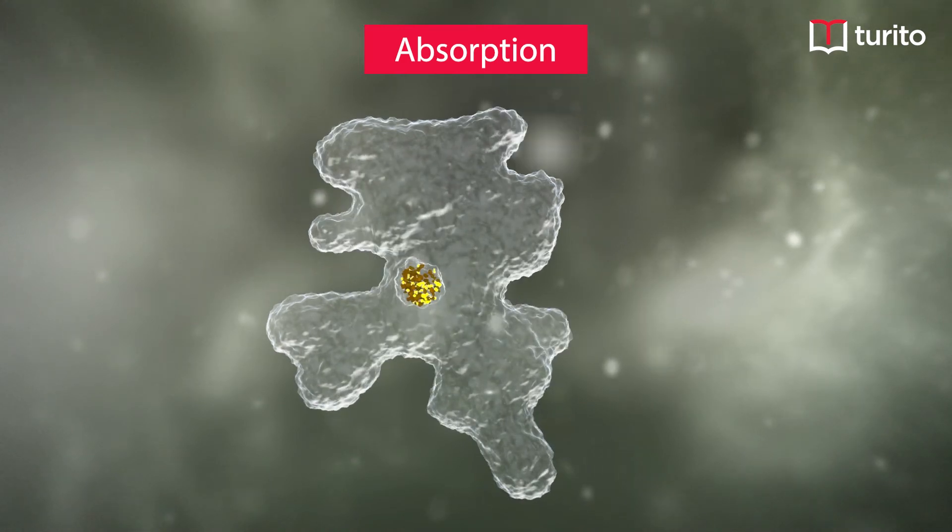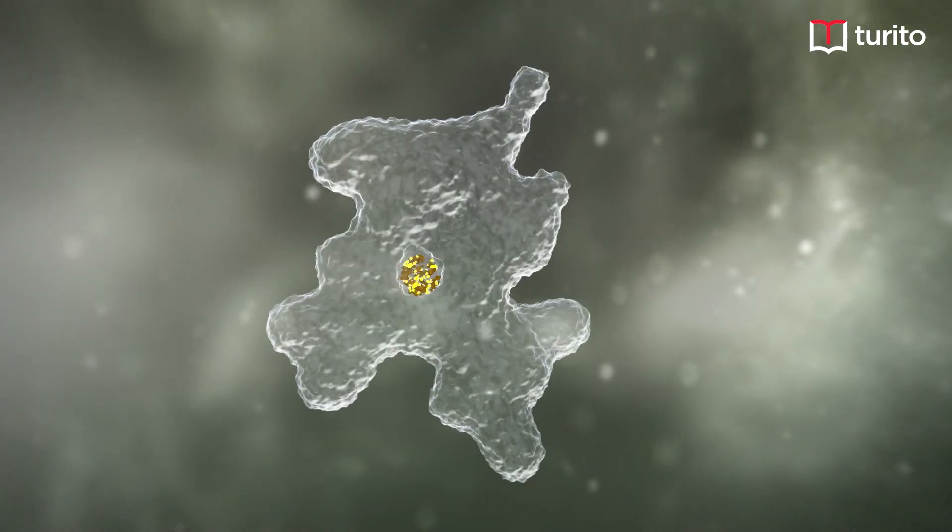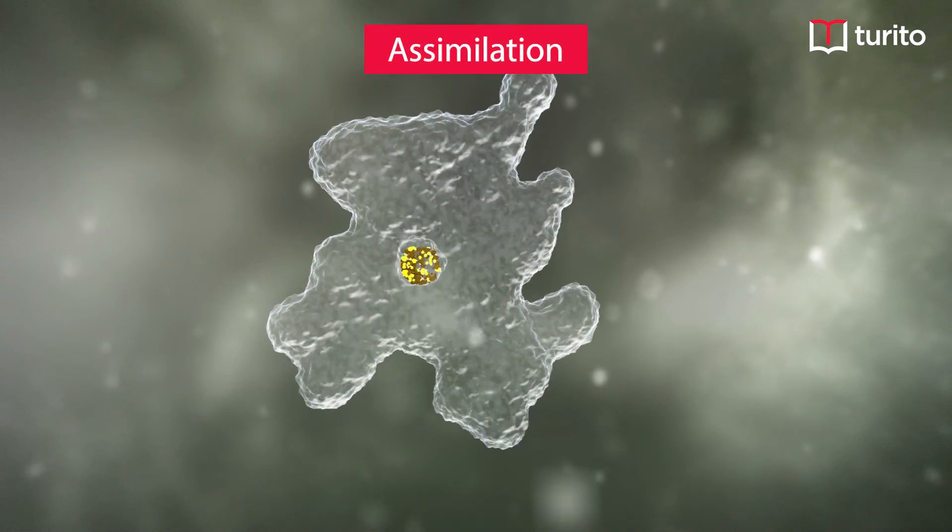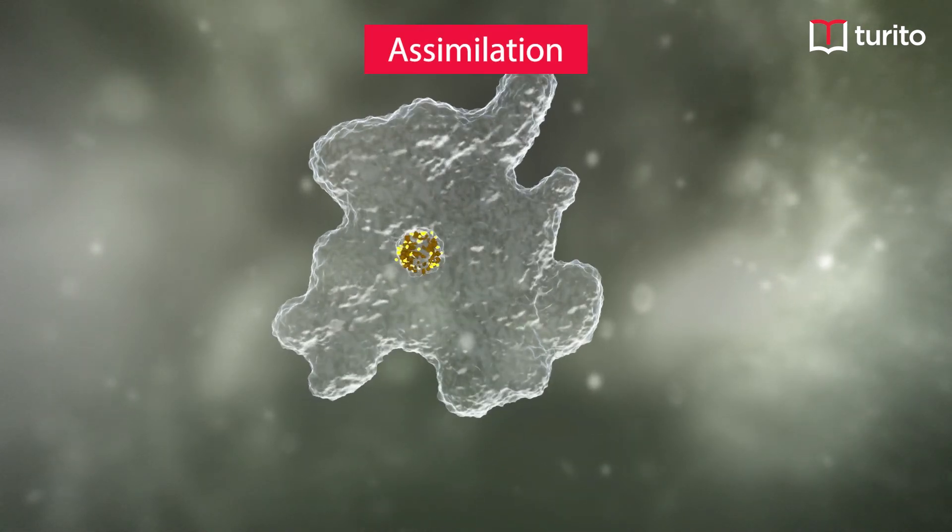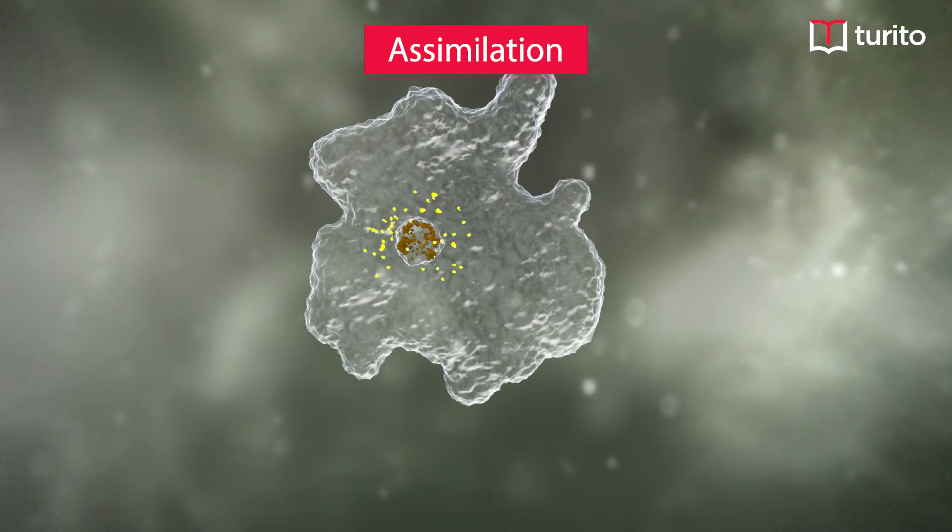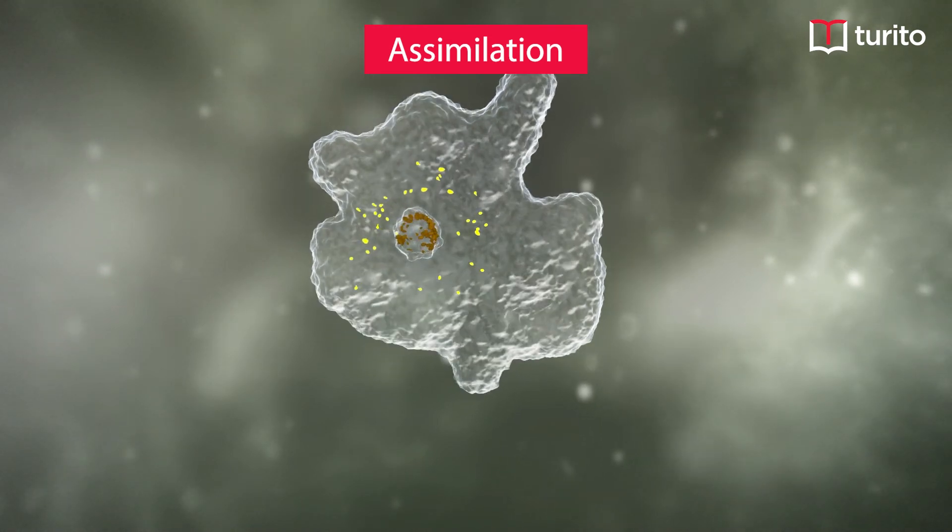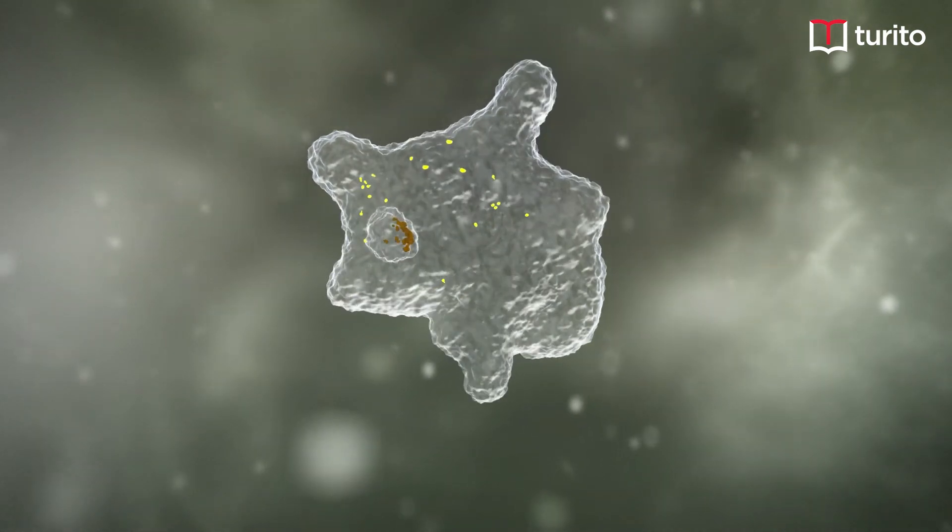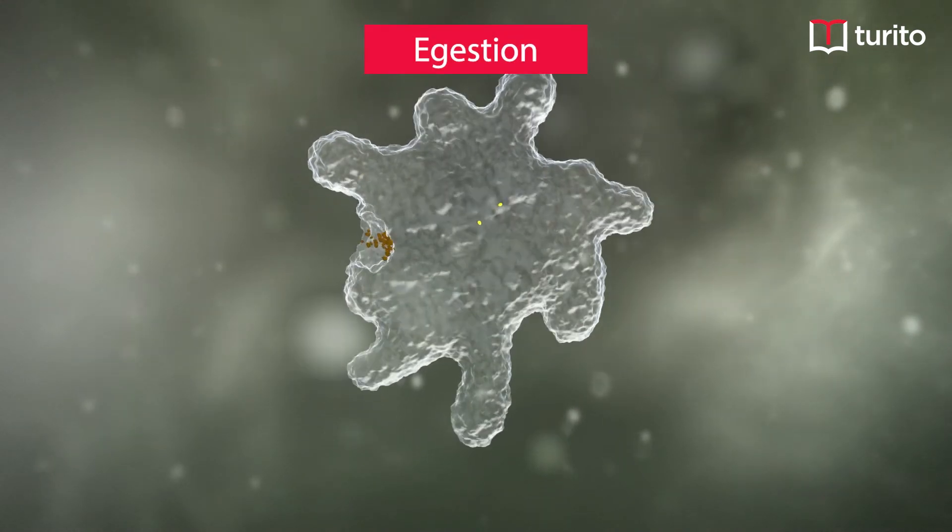The smaller absorbable forms are absorbed into the amoeba, and then there is assimilation of the nutrients. There's utilization of the absorbed nutrients for the physiological activities of the amoeba.